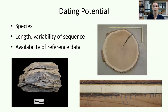Tree ring dating is possible with a variety of wood objects and structures, including log and frame buildings, dugout canoes and shipwrecks, wooden statues, and large pieces of charcoal. Usually, the species of wood involved, like eastern hemlock or different types of oak or pine, must grow rings that vary in width from year to year due to a primary factor, such as precipitation or temperature.